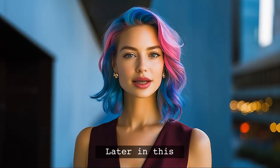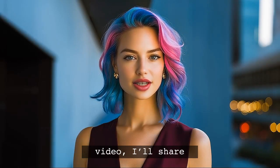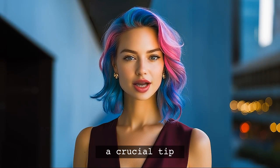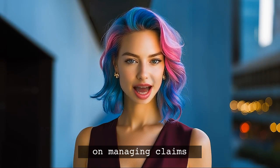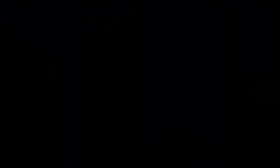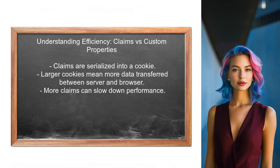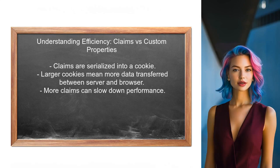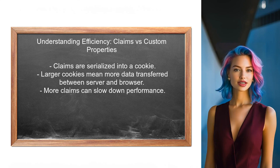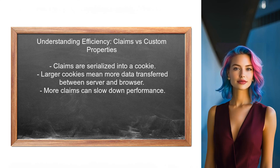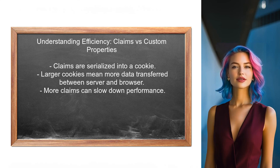Later in this video, I'll share a crucial tip on how to manage claims and properties effectively to optimize your application's performance. To address the question about efficiency, let's first clarify the difference between claims and custom identity user properties. Claims are serialized into a cookie, which means they travel back and forth between the server and the browser. This can lead to larger cookies if a user has many claims.